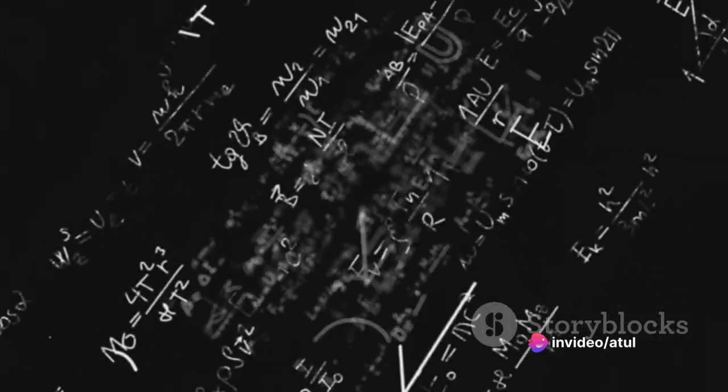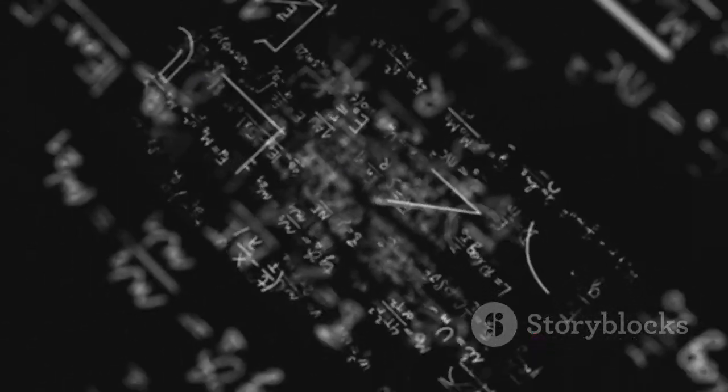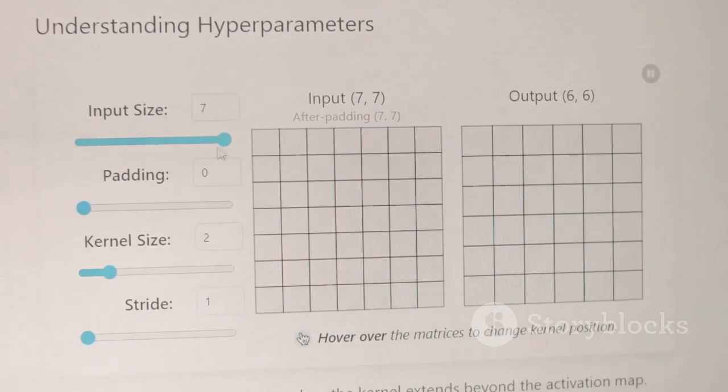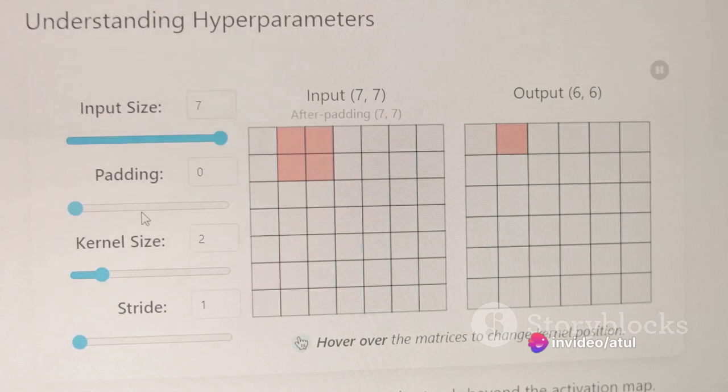The line is defined by an equation in the form y equals mx plus c, where m and c are calculated based on the data. Once we have the equation, we can use it to make predictions.